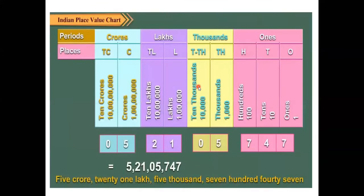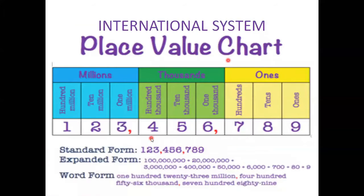We can compare Indian and international place values. In the Indian thousands period, we have only two place values: ten thousands and thousands. Whereas in the international place value system, we have three. Moving to the seventh digit: million, ten million, and hundred million — these three are in the millions period.